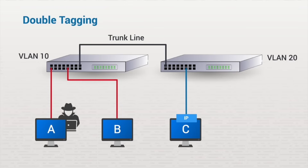To prevent double tagging, it's important to make sure that your switches aren't configured to use native VLANs. This is because trunk ports configured with a native VLAN won't apply their own VLAN tag when sending these frames, which lets the attacker's tagged frames continue as described.